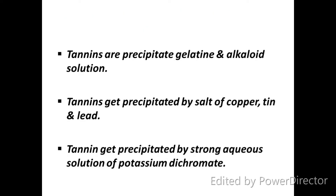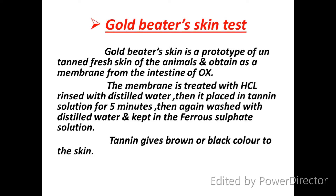Tannins are precipitated by gelatin and alkaloid solutions. Tannins also get precipitated by salts of copper, tin, and lead. Tannins can also get precipitated by strong aqueous solutions of potassium dichromate.